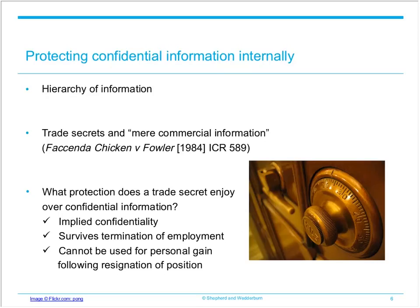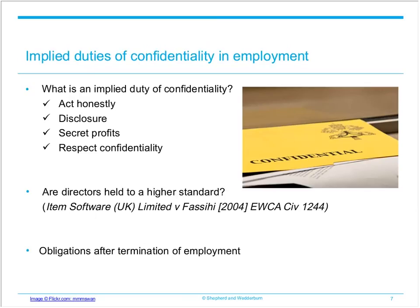In Faccenda's case, Mr Fowler would not have been able to give a competitor the commercially sensitive information whilst he was employed, but there was nothing to stop him from using that information for his own benefit after he resigned. When thinking about the best ways to keep information confidential, a common problem in many industries is that providing information to employees creates a risk that the information is passed to a competitor, or that the employee will leave the business and use the information obtained as a basis to set up in competition.